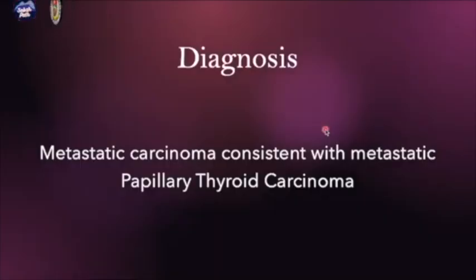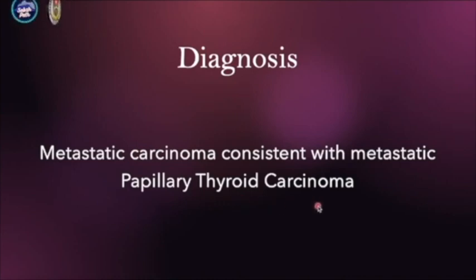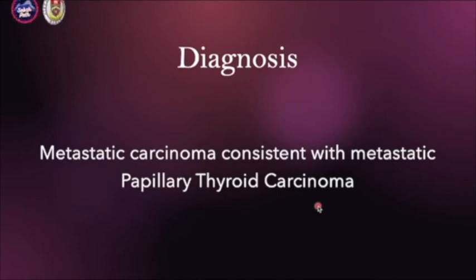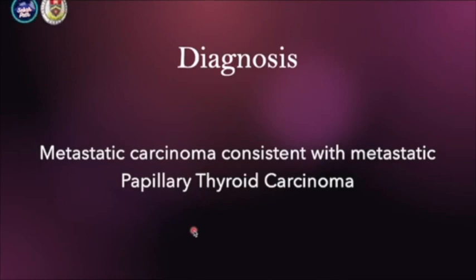This is what we call intranuclear cytoplasmic inclusion. Some pathologists call it nuclear pseudo-inclusion because it's actually cytoplasmic inclusion going into the nucleus, not a true inclusion. So in this case, it is a metastatic carcinoma consistent with metastatic papillary thyroid carcinoma. For papillary thyroid carcinoma, it usually has three characteristics: changes to the size and architecture, changes in the membrane, and changes in the chromatin. Usually two out of three changes confirm the diagnosis.